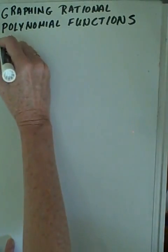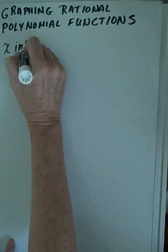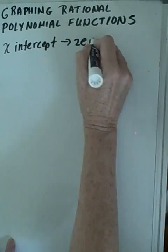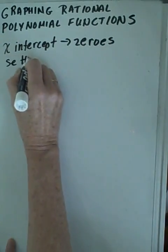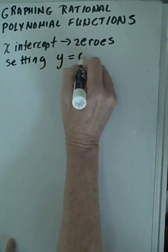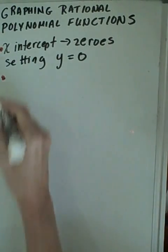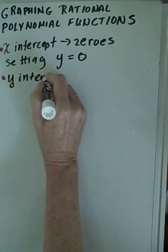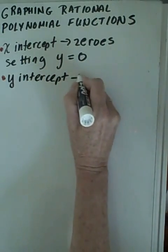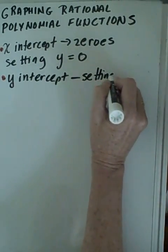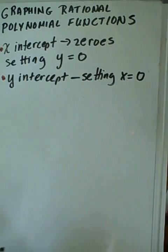Some information would be like the x-intercept, which we also know is our zeros. We find these by setting y equal to zero. So that's one thing we need to know. Second thing we can find is our y-intercepts, and we do that by setting x equal to zero.